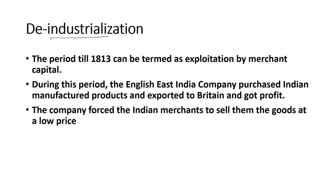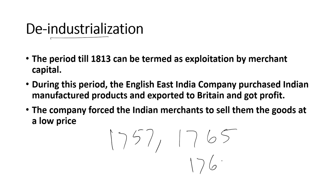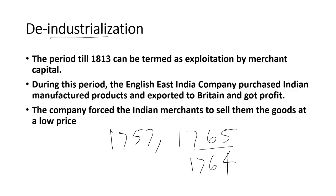Since the establishment of political power by the British — in 1757 through the Battle of Plassey, and in 1765 through the Treaty of Allahabad after the Battle of Buxar of 1764 — after the Battle of Buxar, in 1765 a treaty was entered into between the British and the Nawab of Bengal, under which the British got the Diwani of Bengal, Bihar and Orissa. During this period, that is from 1765 to 1813, it was the period of merchant capitalism.